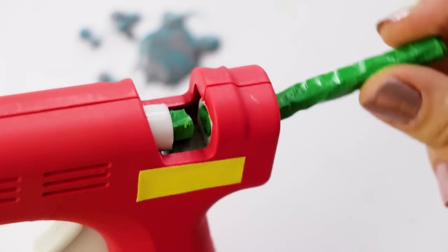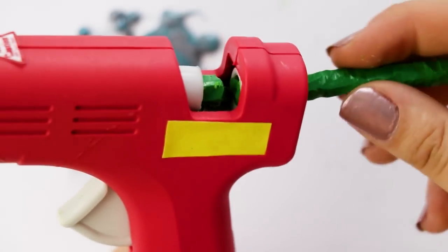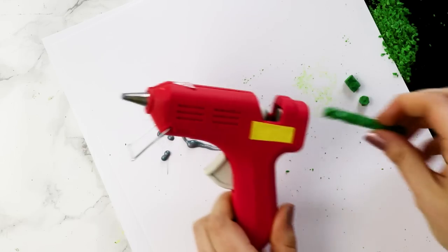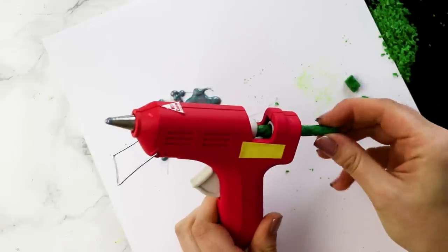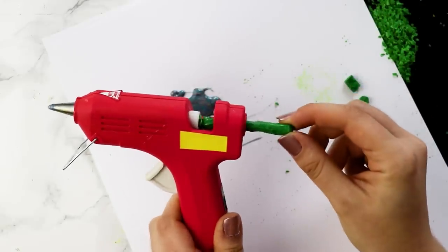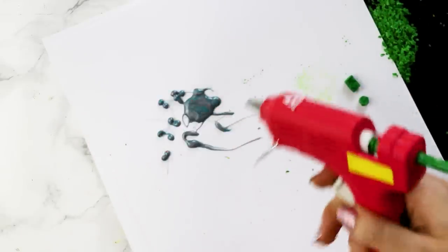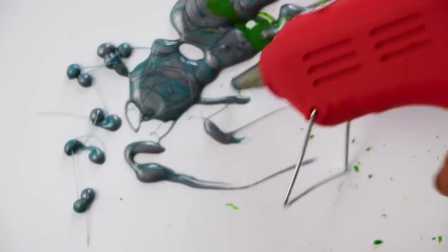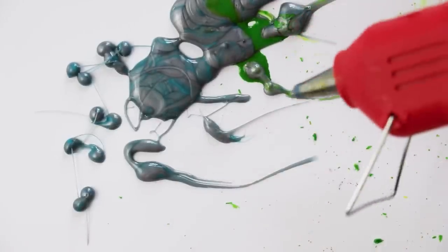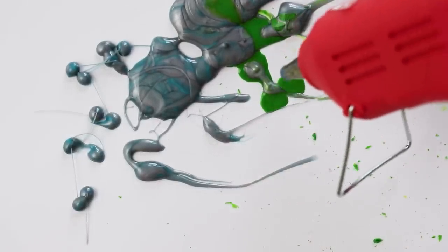So when I tried to get the crayon loaded into the glue gun, unfortunately it broke. But I just fed the broken end back in, and even though my crayons did keep breaking, it didn't end up being a problem. So once the wax from the crayon got to the tip of the glue gun,